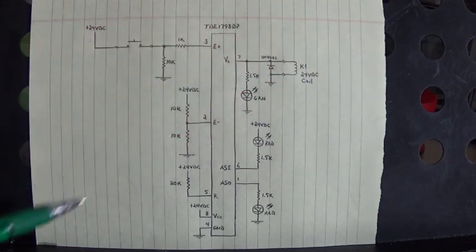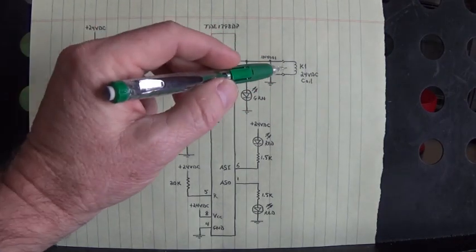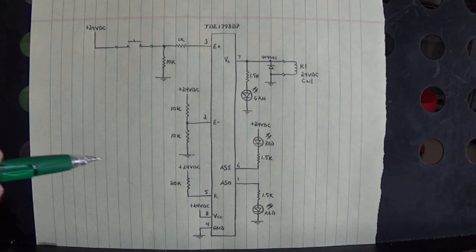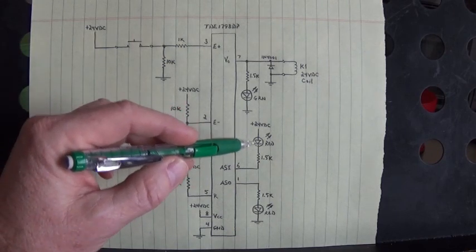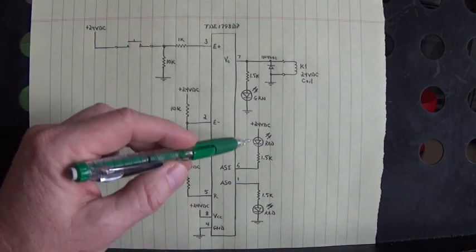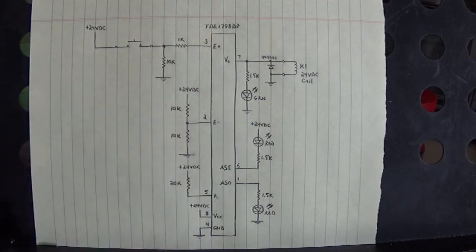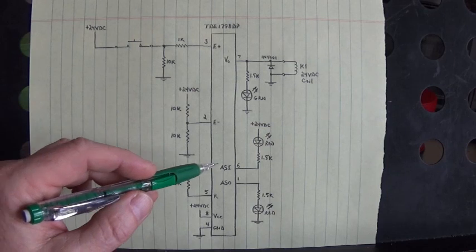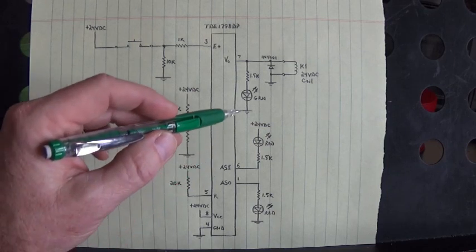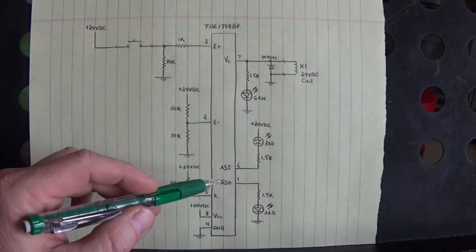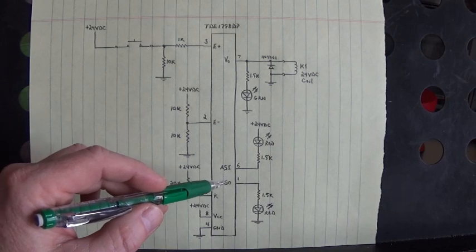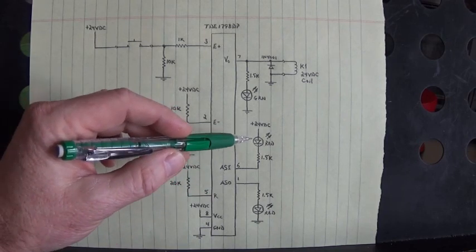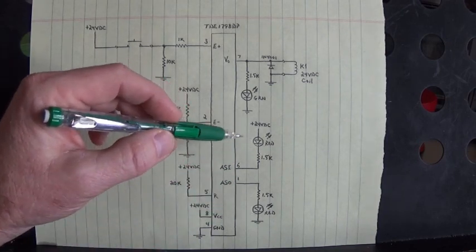Here are the alarm LEDs, those two red LEDs right there. Pin 6 is your alarm output sink and pin 1 is your alarm output source. Notice the orientation of the LEDs.